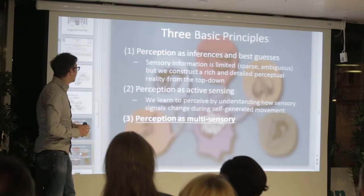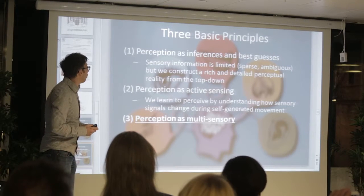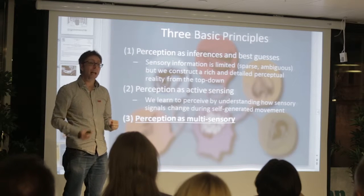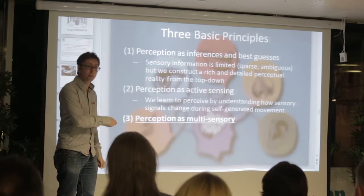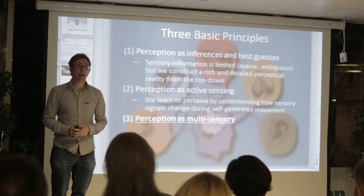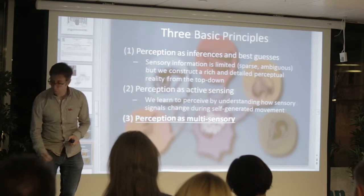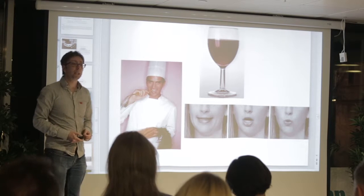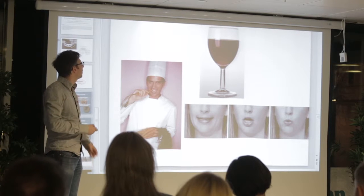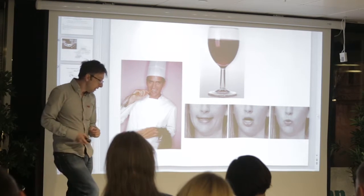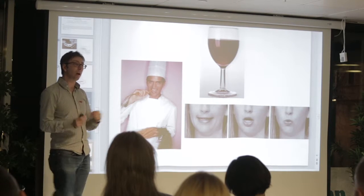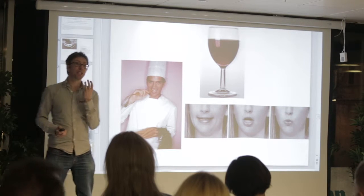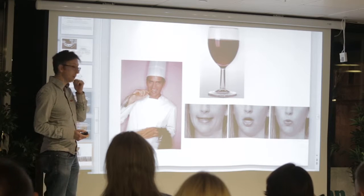The third principle is that perception is multisensory. All these principles are linked — the perceptions we create are based on multiple sources of information: top-down knowledge, motor information, and information from other senses. Eating and drinking are classic examples of multisensory processing. People think it's about mixing taste and smell, and that's a very important part, but actually all of the senses are involved — a sense of texture in the mouth, hardness, softness, creaminess, and so on.